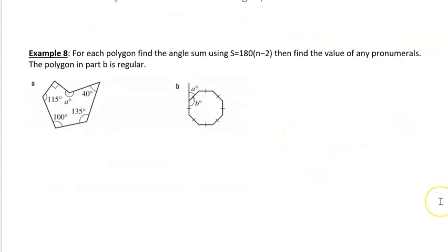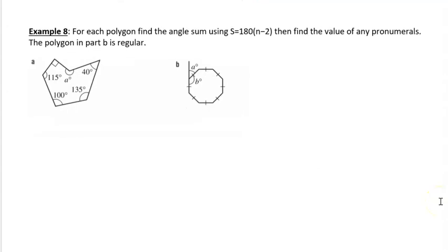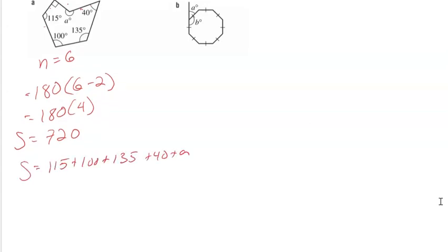Now this is a little bit trickier. For each polygon, find the angle sum using 180 times the number of sides minus 2, and then find the value of the pronumerals. Number of sides equals 6. So we're going to use 180 times the number of sides, 6 minus 2. So 180 times 4, so that is 720. So that's our interior angle sum. And so now we're going to add A there, plus it doesn't matter because they're associative, plus 480. So if we work that all out, we find that 240 is A. A is 240 degrees, and that makes sense because that is a reflex angle.